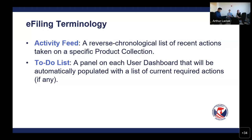The first being the activity feed, which in internet parlance could also be referred to as a timeline of sorts, but it's a reverse chronological list of recent actions taken on a specific product collection. When you've updated certificates, when you've added new certificates, the test data, when the certificate's been attested to — these are all the sorts of things that are going to show up in that. You can scroll back very far. We haven't come up with the specific details — I don't know if it will endlessly go back to the beginning of time or if there will be a limit to it, but that's the basic function of it.